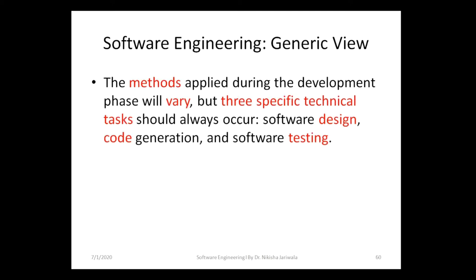As discussed in the previous phase, the method may vary, but there are three specific technical tasks in the development phase: software design, code generation, and software testing — designing, coding, and by the end, testing. This is the second phase of the generic view.